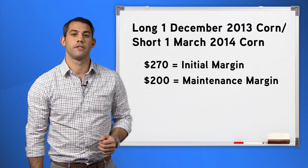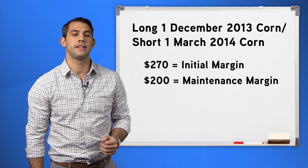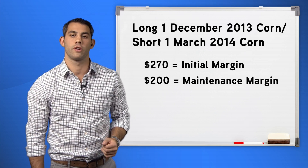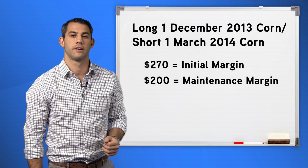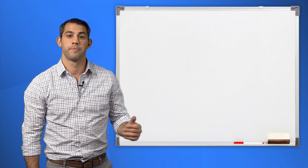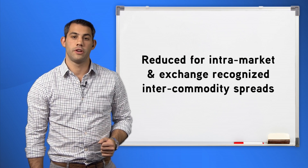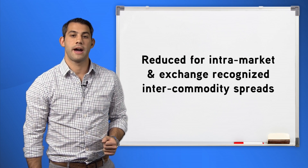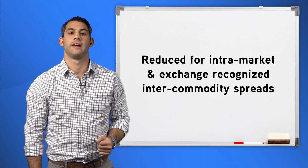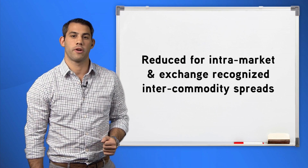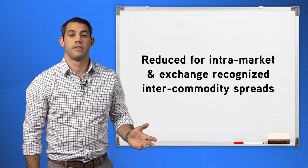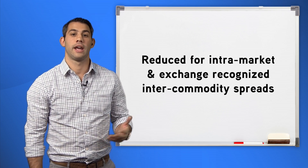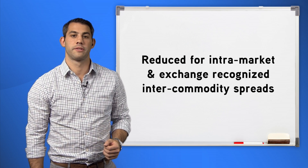Exchanges recognize that futures spread trading is generally less volatile than being just long or short an outright futures contract. Therefore, the margin requirements are reduced for intermarket commodity spreads or exchange-recognized intercommodity market spreads. The benefit is less margin tied up and the ability to trade additional contracts.